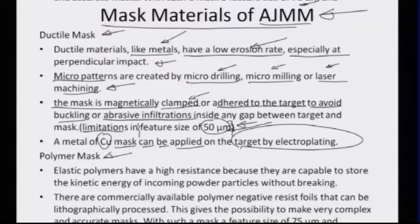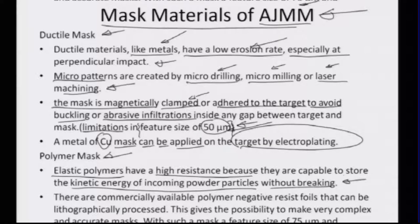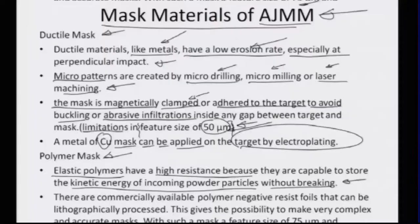When using polymer masks, preferably elastic polymers should be used because they have high resistance and can store more kinetic energy of the incoming powder particles without causing brittle fracture or breaking. Typically, something like polydimethylsiloxane PDMS — a highly viscoelastic material — which is well structured and well patterned can be used for the abrasive jet machining process. Another very important aspect is that some polymers are photo-patternable; there is the unique ability of photo-resist type polymers like SU-8, SU-18, and similar to be photo-patterned at good resolution using a mask.